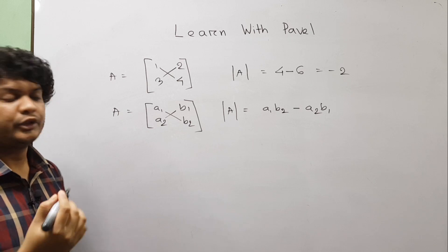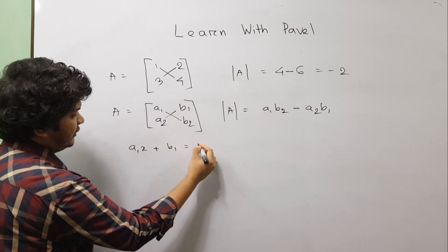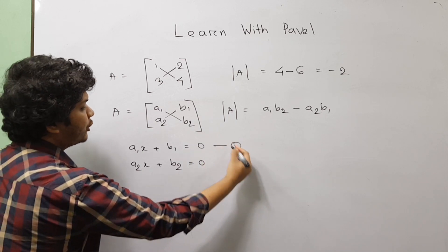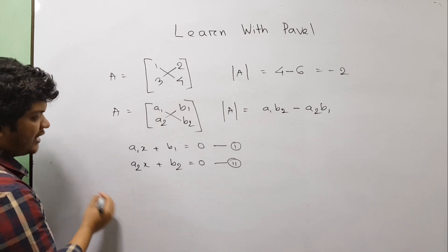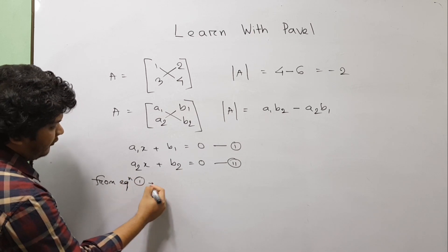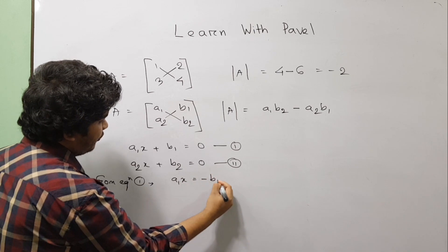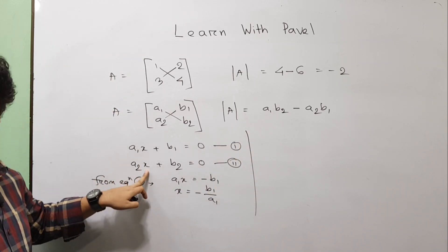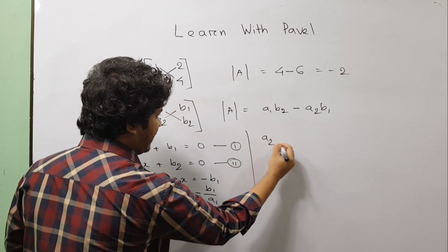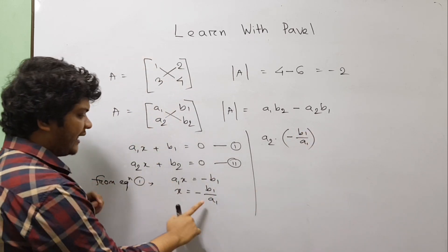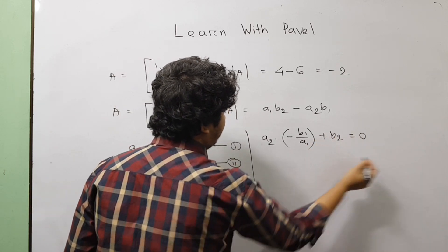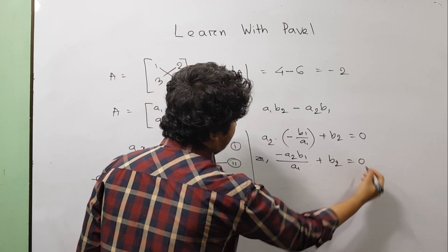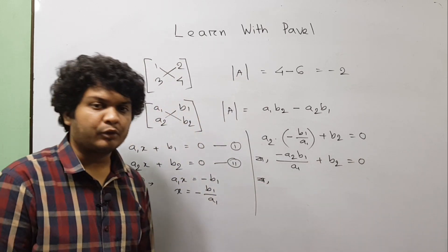Suppose a1*x + b1 = 0 and a2*x + b2 = 0. From equation 1, x = -b1/a1. Substituting into equation 2: a2*(-b1/a1) + b2 = 0, which gives a2*b1/a1 + b2 = 0.